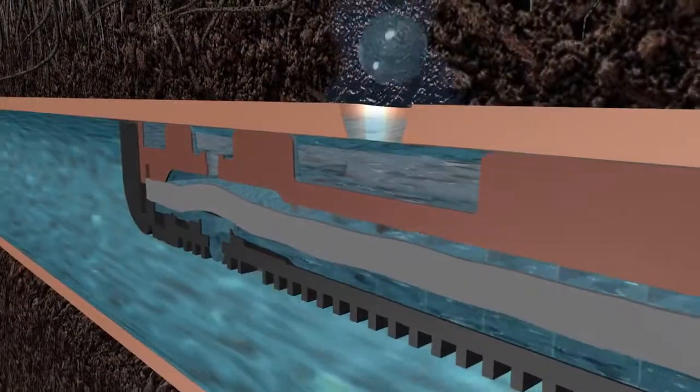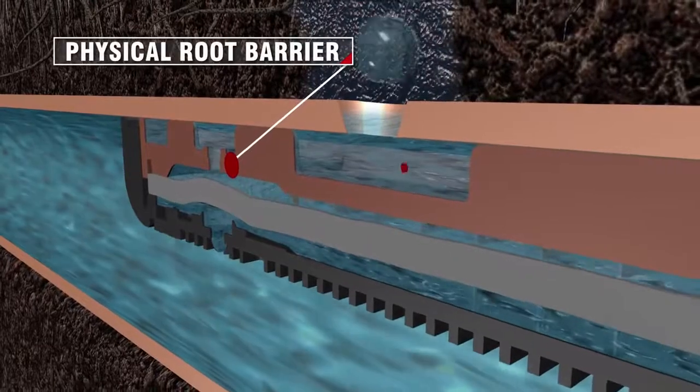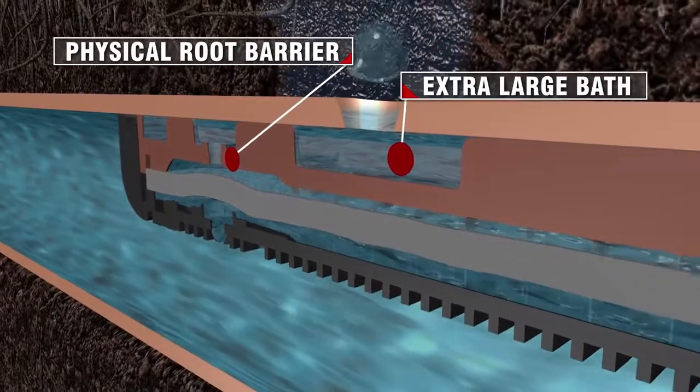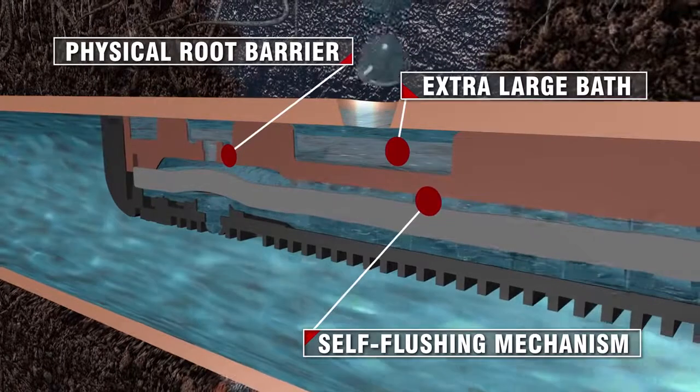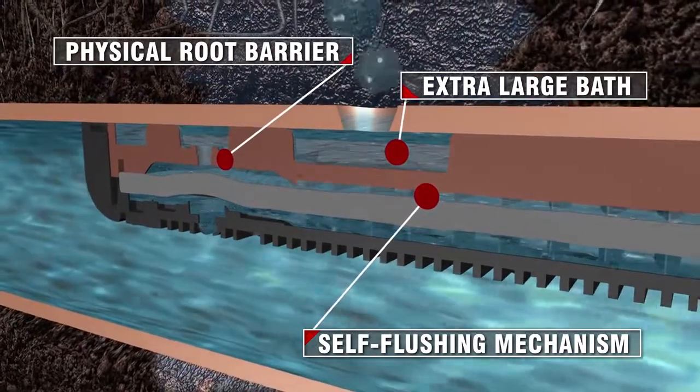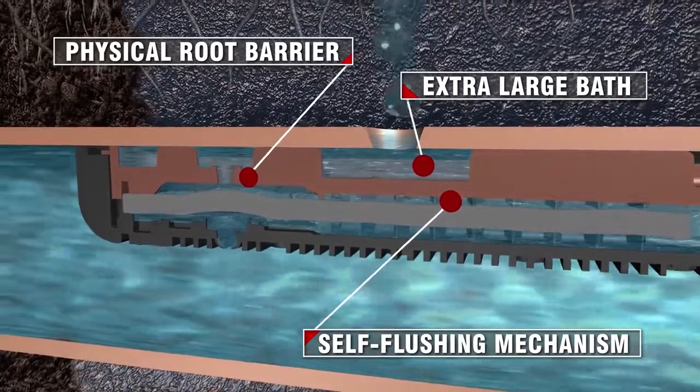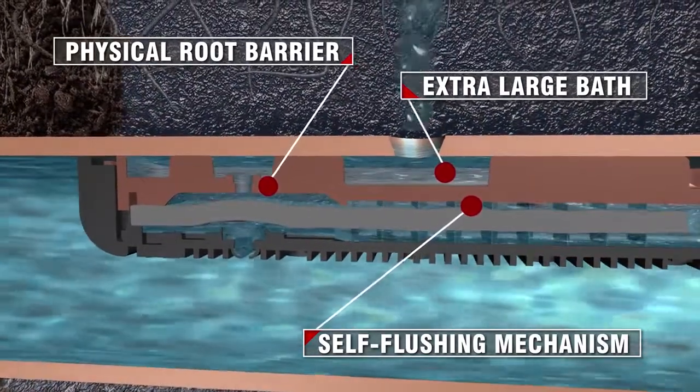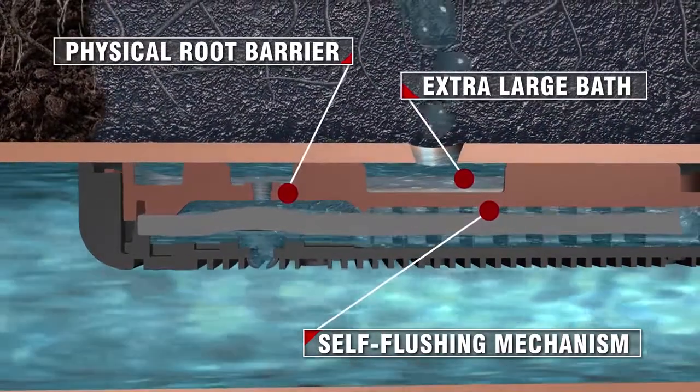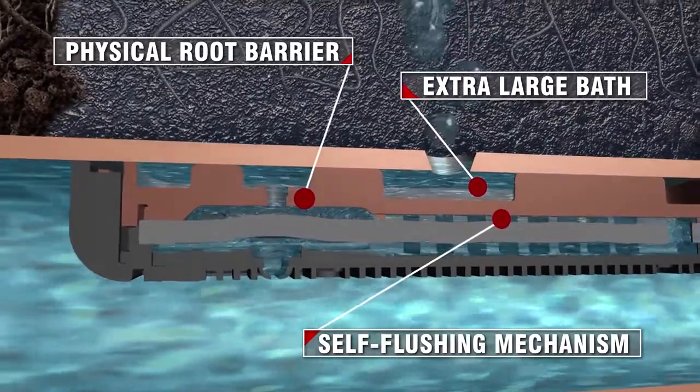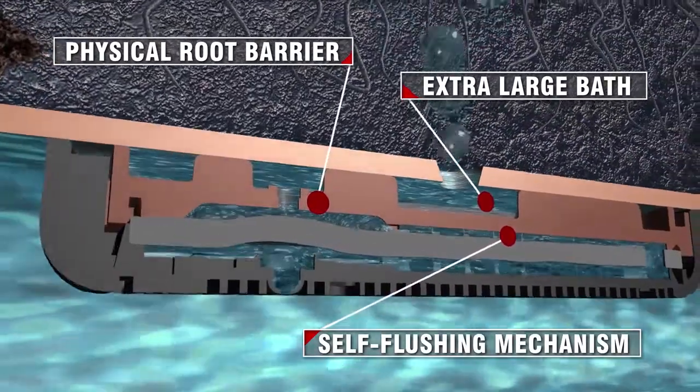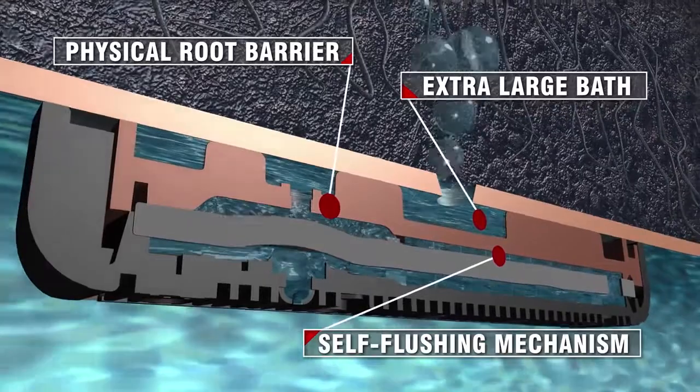In addition, the emitter's physical root barrier, extra-large bath area, and continuous self-flushing mechanism prevent fine feeder roots and sediment from inhibiting water flow within the drip line. And as the only manufacturer to offer such unprecedented technology to mitigate root intrusion, professionals and growers can be assured that they are getting the industry's best protection.